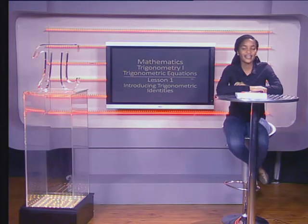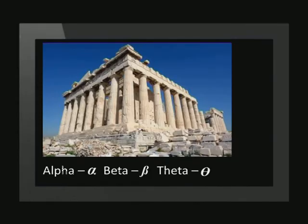Before we get started, let's go through why we use the Greek alphabet to represent angles. The Greeks produced and developed an amazing amount of maths, including geometry and trigonometry. So we use Greek letters like alpha, beta, and theta as a measure of respect. Don't worry about them too much — they are variables just like x and y. We just use them to represent angles.